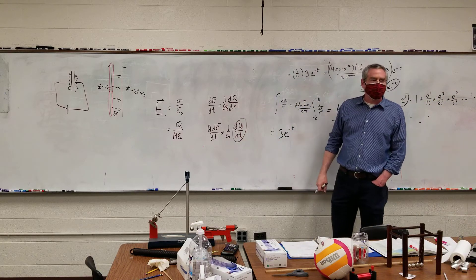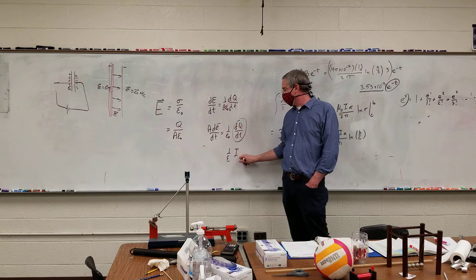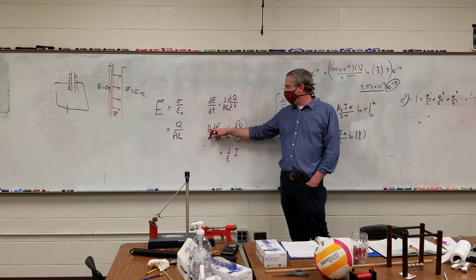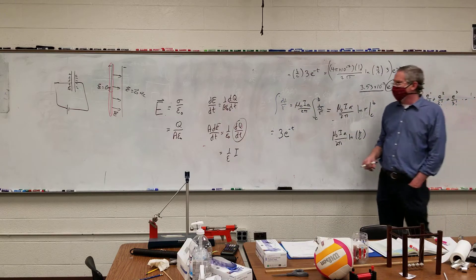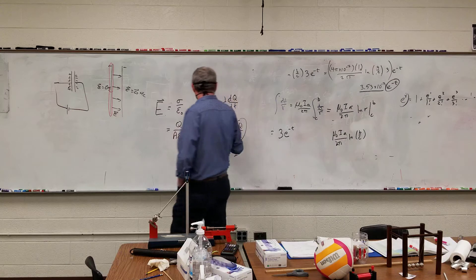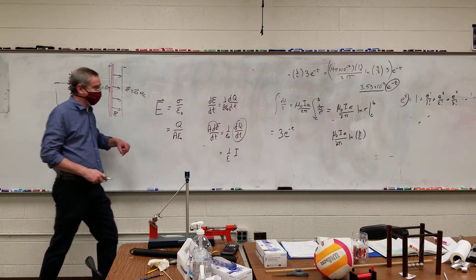What's dq dt? So this becomes 1 over epsilon sub-naught pi. And my area here does not change with time, so I'm basically going to throw that on the inside of the derivative, just like you can take a constant out and put a constant in.